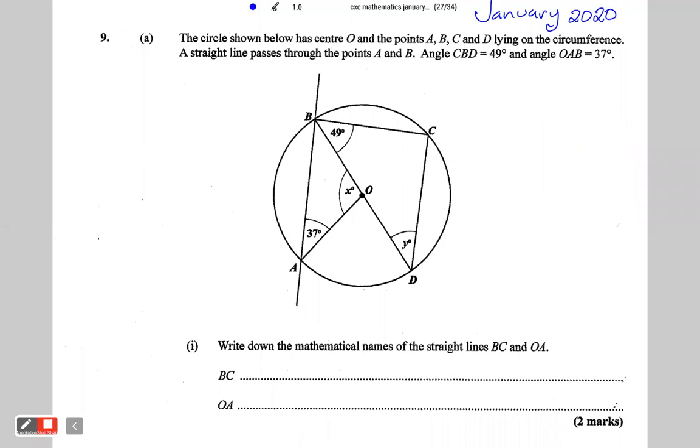We're to write down the mathematical names of the straight lines BC and OA. So BC is a chord. A chord is any straight line that is drawn across the circle that touches the circumference at two points.